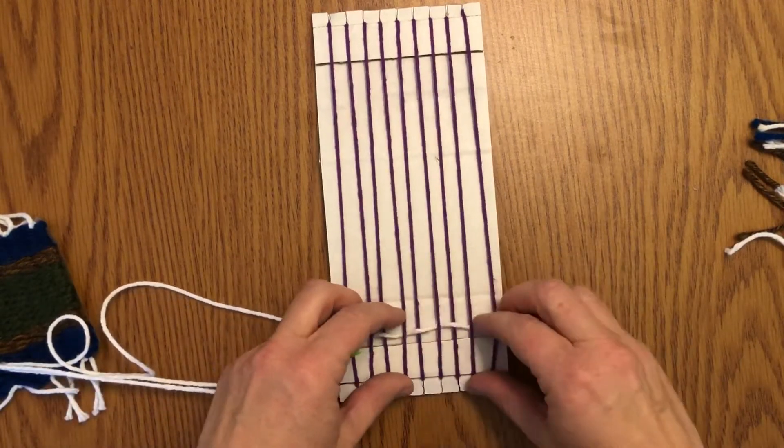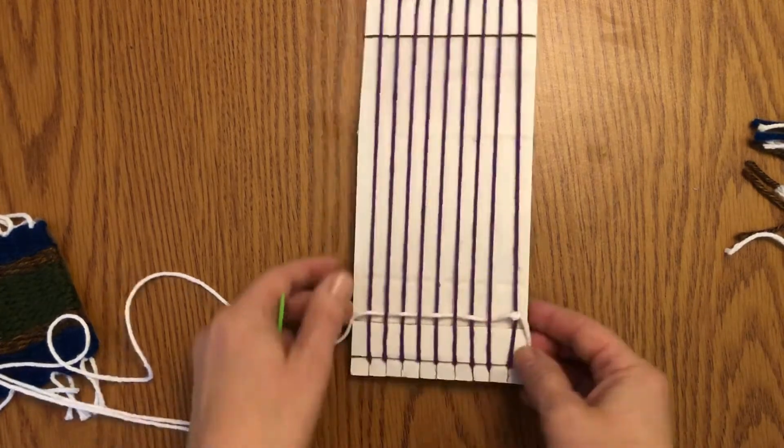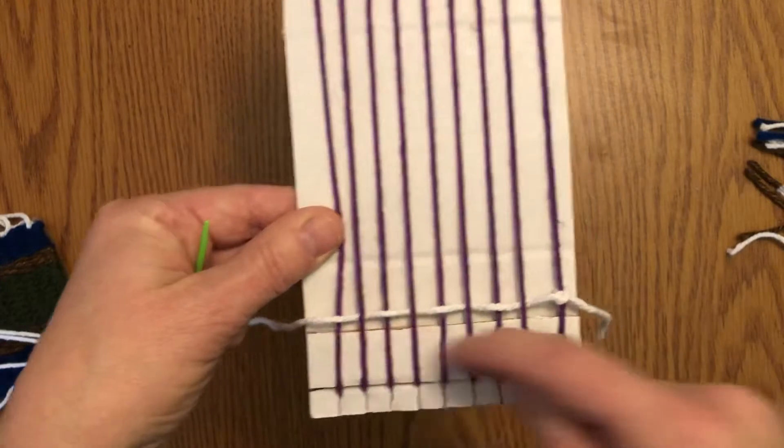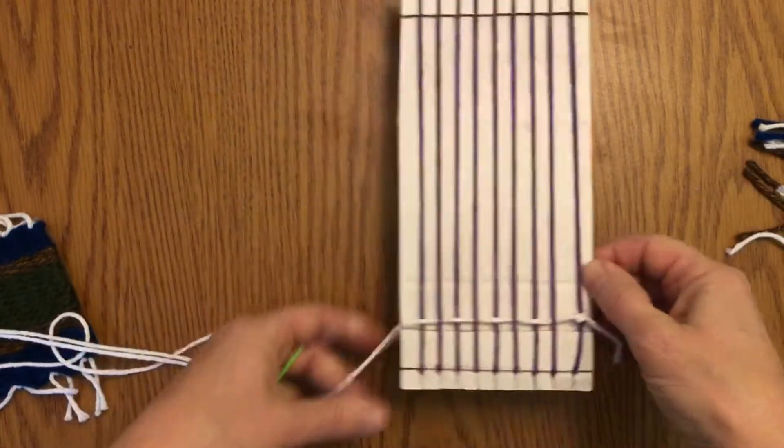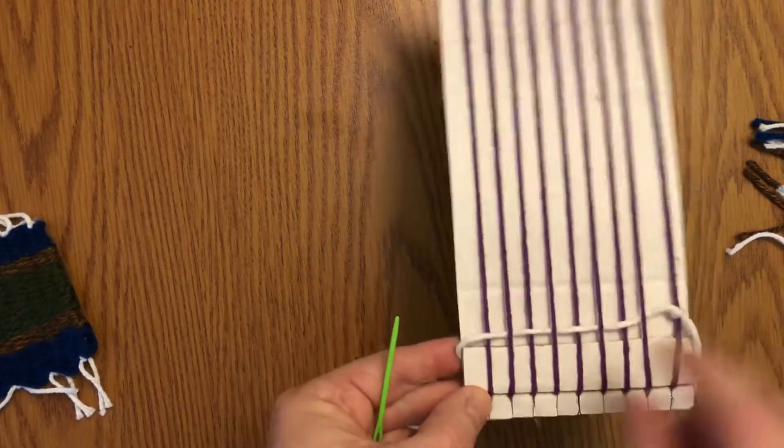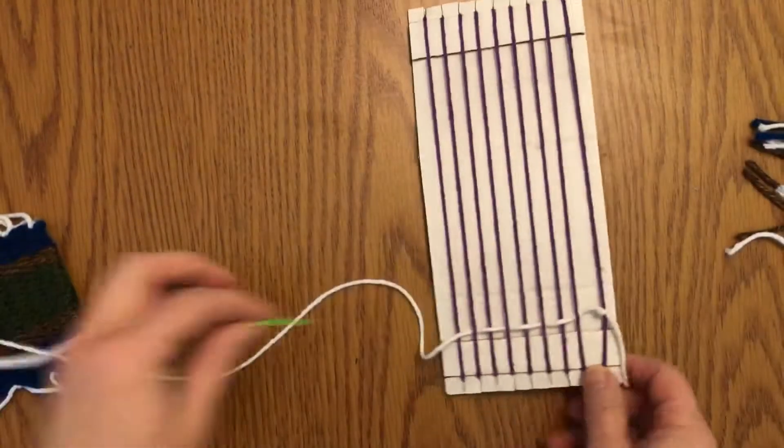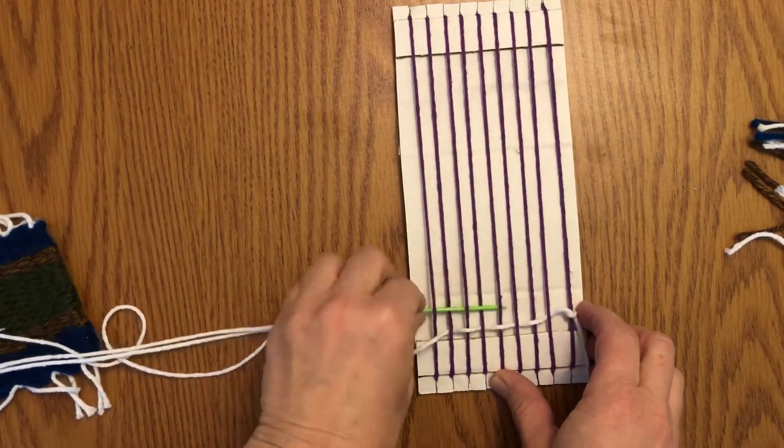We glued these cardboard sections on, so you may want to just push it to there—that's a good place to stop. Then coming back the other way, I finished going over the last warp thread, so coming back I just have to go under. So under over, under over all the way across.